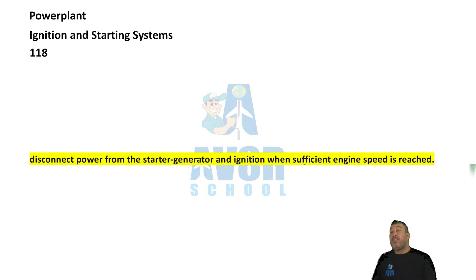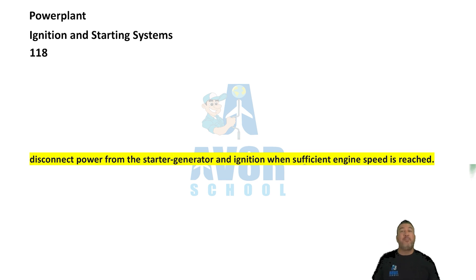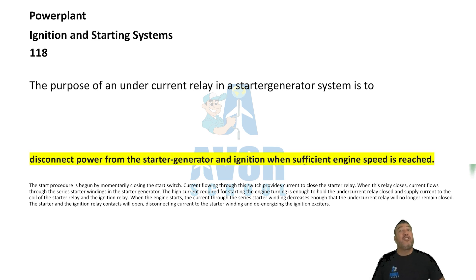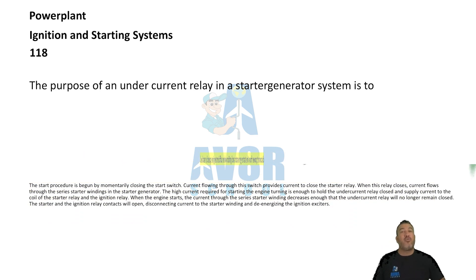Number 118. The purpose of an undercurrent relay in a starter generator system is to disconnect power from the starter generator and ignition when sufficient engine speed is reached.